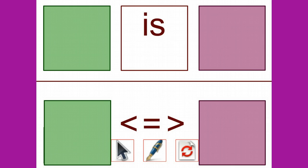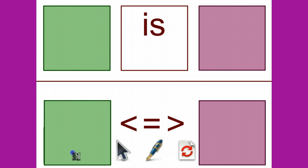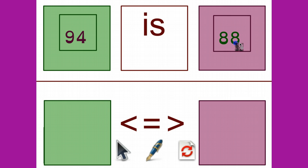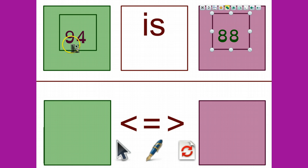This is a review of how to compare numbers using an open number line. My first number was 94, so I'm just going to put that on my number line.